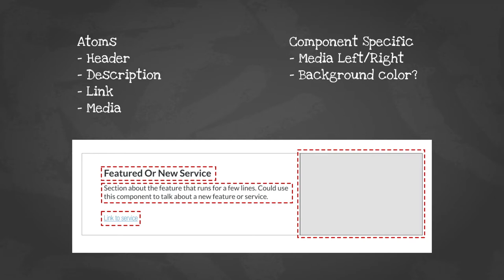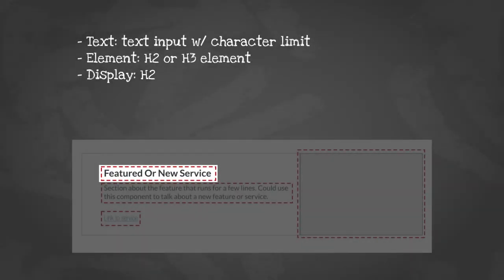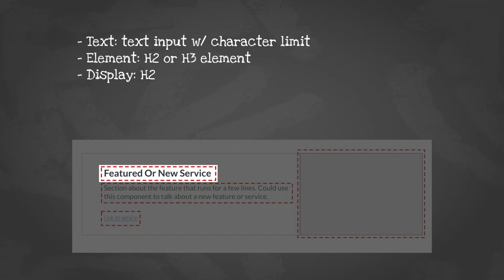Even though it looks like a simple component with flat fields, it makes a lot more sense to build it atomically. Take just the header: it's not just text, it's not just an H2 element — there are really three things going on. You have the text, but having worked on accessibility sites, often the display style doesn't match the actual HTML element on the page. You need to be able to say this element is an H2 on this page and an H3 on another page to meet accessibility and SEO criteria, while still looking the same regardless of the HTML element.